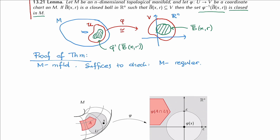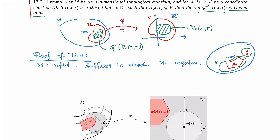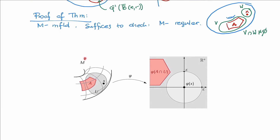Recall that regularity of M means: given a closed set A in M and a point X outside of A, we should always be able to find an open neighborhood V of A and an open neighborhood W of X such that these neighborhoods do not intersect. So let's assume we have manifold M, closed set A, and point X not in A, and let's construct those neighborhoods.